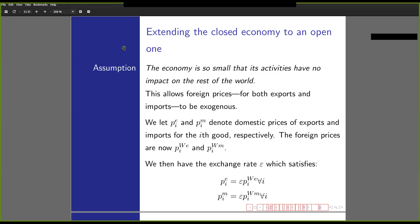Let's begin with extending the closed economy model into an open economy one. Our first assumption is that the economy to be modeled is so small that its activities have no impact on the rest of the world. Mathematically, this means that foreign prices for both exports and imports are exogenous. We let p_i^d and p_i^m denote domestic prices of exports and imports for the ith good, respectively. The foreign prices are p_i^f,x and p_i^f,m. We then have the exchange rate epsilon which satisfies: p_i^d = epsilon * p_i^f,x and p_i^m = epsilon * p_i^f,m.